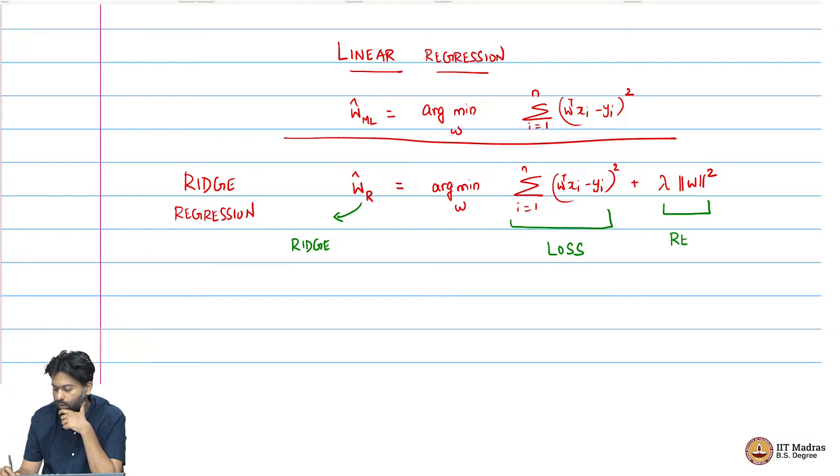This term is usually called a regularizer. Basically, in addition to the loss, you want to add some quantity as a penalty for preferring some types of w's. When I say we put a prior on w and do Bayesian modeling, it means we are preferring some types of w's.